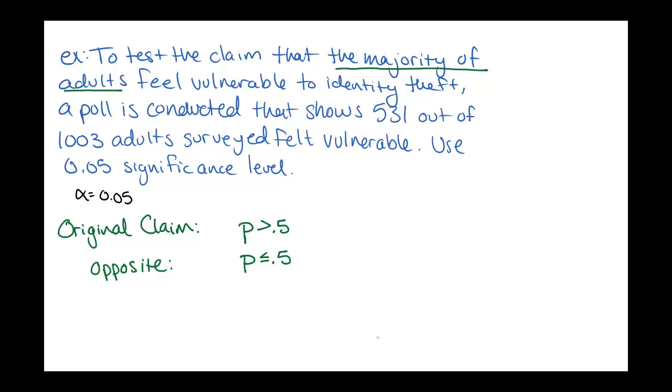And from these, we can determine our H0, our null hypothesis. Remember, this is always the equals version. So the null hypothesis would be that exactly half of people feel vulnerable to identity theft. And then our alternative hypothesis is the one of these two that does not have the equal sign. So in this case, that would be the same as our original claim, which was P greater than 0.5.